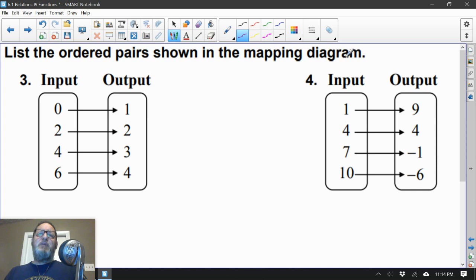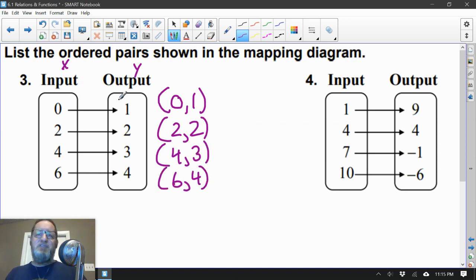List the ordered pairs shown in the mapping diagram. Do you remember how this works? All we have to do is take our inputs, which are the x values, and our outputs, which are the y values, and just bring them together in an ordered pair. So that would be (0, 1), (2, 2), (4, 3), and (6, 4). It's just rewriting them in a format that we would call an ordered pair.